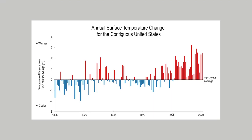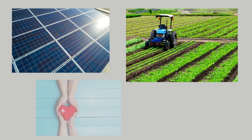In the continuous United States, temperatures during this century have been, on average, 1.5 degrees Fahrenheit warmer than during the last century. This indicator can inform preparedness decisions in a wide variety of sectors, such as energy production, agriculture, and human health.